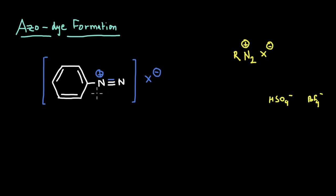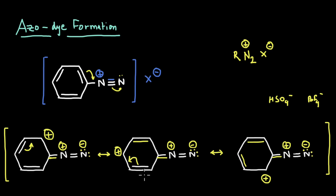One more thing about this ion is that it is resonance stabilized. If we were to draw the resonance structures of this ion, it would look something like this — you can see how when we shift these bonds, we get these resonance structures. If this group R is an alkyl group, there will not be any resonance, and hence the resulting ion will be highly unstable and therefore not available for the reaction. But since R is an aromatic ring, resonance is why this ion is stable.